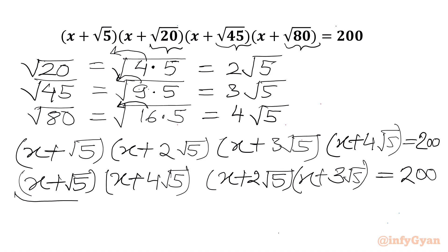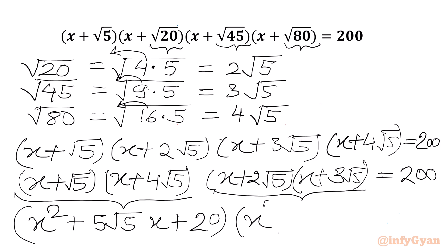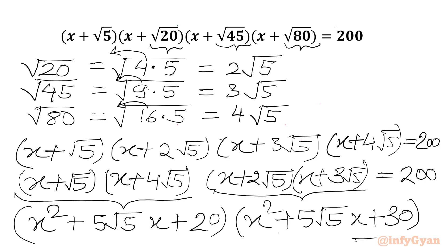Let's multiply. So (x + √5)(x + 4√5): x² + 4x√5 + x√5 + √5·4√5 = x² + 5√5·x + 20. And (x + 2√5)(x + 3√5) = x² + 5√5·x + 30, equal to 200.